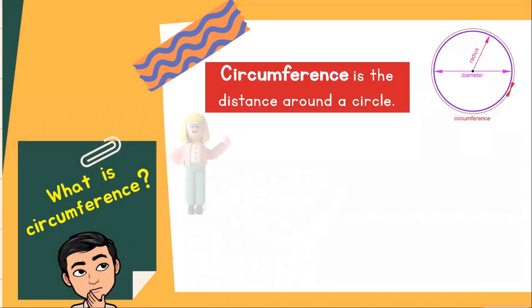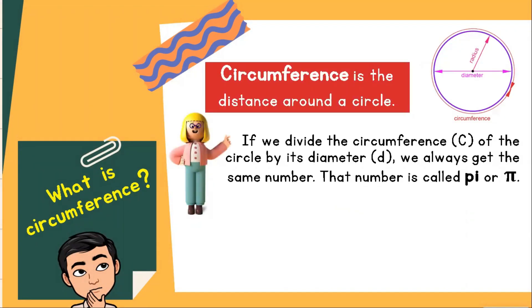With regard to the circumference, if we divide the circumference of the circle by its diameter, we always get the same number. That number is called pi, or the symbol shown on the screen. To the nearest hundredths, approximately, the value of the pi is 3.14, or 22 sevenths.